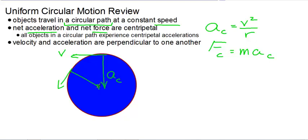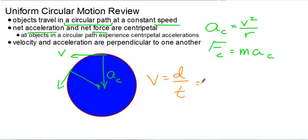The velocity and acceleration are always perpendicular to each other for an object experiencing uniform circular motion. Also, when the object is experiencing uniform circular motion, we can use our speed equation where v is distance over time. The distance an object travels one time around is the circumference, or 2 pi r, and the time it takes to go around one time is defined as the period, capital T.